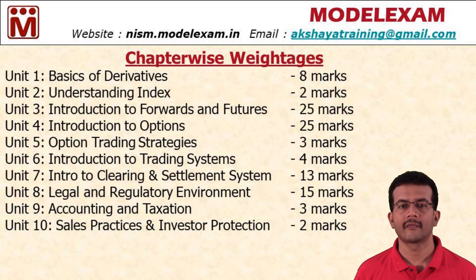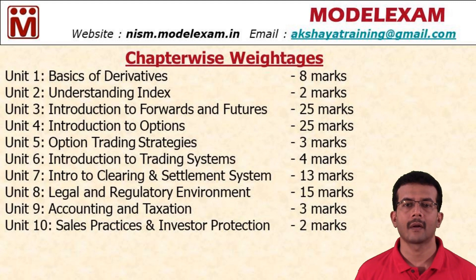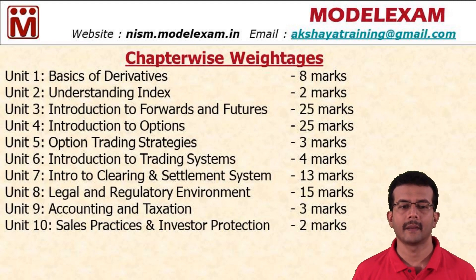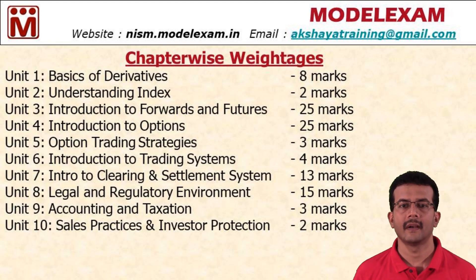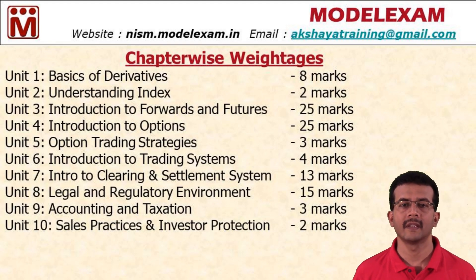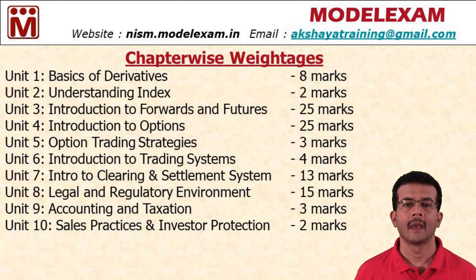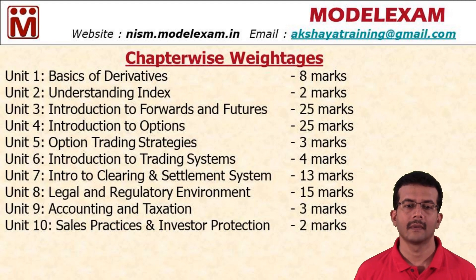Only people from a commerce background can understand Unit 9. These chapters — Unit 5 and Unit 9 — are exhaustive and difficult, so if you are not able to understand them, you don't need to spend more time on them. You need to concentrate on the four chapters: Unit 3, Unit 4, Unit 7, and Unit 8.